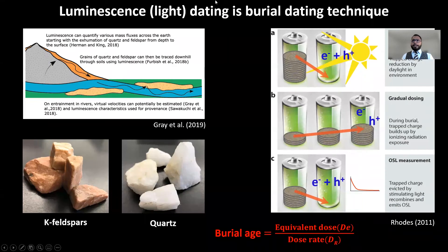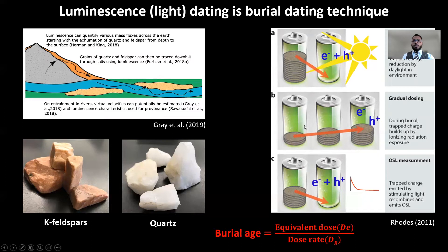Luminescence dating is a burial dating technique. Quartz and feldspar, when exhumed to the surface as part of the bedrock, start accumulating trapped charges in their finite crystal defects. This happens due to the presence of naturally occurring ionizing radioactive elements such as uranium, thorium, and potassium. We can explain this process through this simple battery diagram.